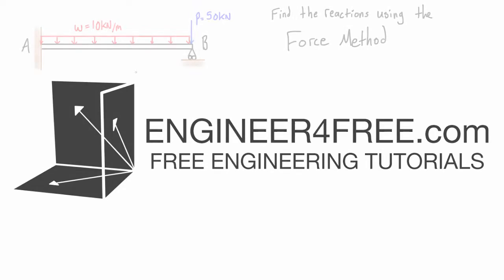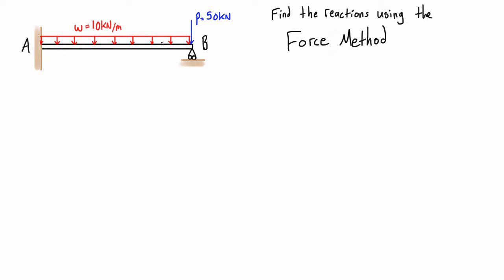In this video we want to use the force method to solve a statically indeterminate problem which is one degree statically indeterminate. We can figure that out by counting up the reactions: we have three at point A — the moment MA, and then AX and AY — and then one reaction at B which is just BY. So we have three equations of equilibrium and four unknowns, meaning we can't solve it with statics alone. That makes it first degree statically indeterminate. If we had two extra unknown forces it would be second degree statically indeterminate.